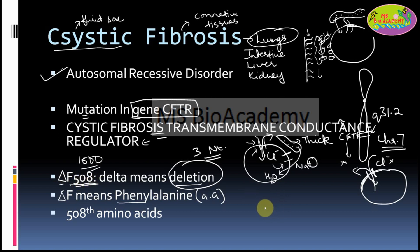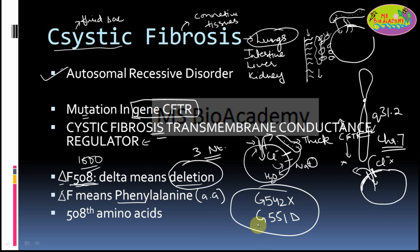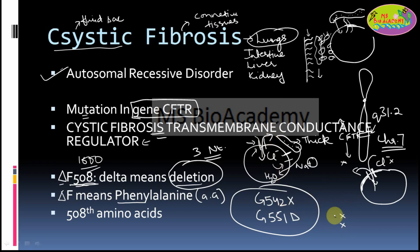Apart from the ΔF508 mutation, other commonly found mutations responsible for cystic fibrosis are G542X and G551D. These are all common mutations occurring in the CFTR gene. They lead to cystic fibrosis either due to non-formation of the CFTR transmembrane chloride channel protein, or because the protein is formed but is not functional — meaning it cannot regulate the chloride gradient.